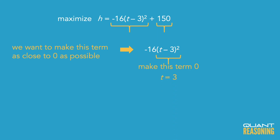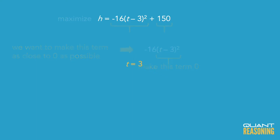The question is talking about what happens two seconds after we get to the maximum. So if the maximum is at t equals three seconds, two seconds after that t will equal five.